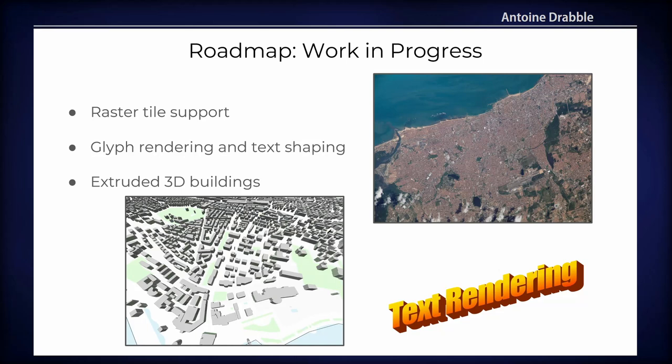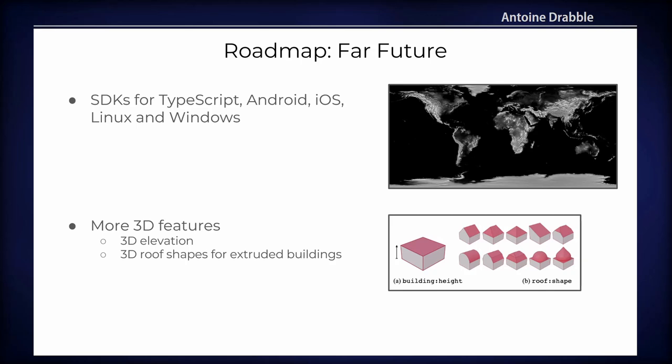We are currently working on raster tile support, glyph rendering, and text shaping — two equally difficult challenges. We already have extruded 3D buildings experimentally. In the far future we want to write SDKs for TypeScript, Android, iOS, Linux, and Windows with proper APIs in Kotlin and Swift, and add more 3D features such as 3D elevation and support for roof shapes on extruded 3D buildings.